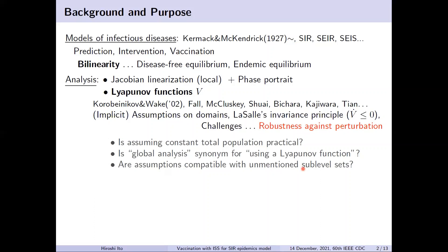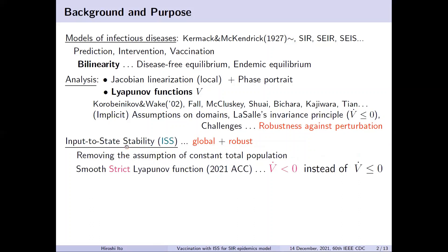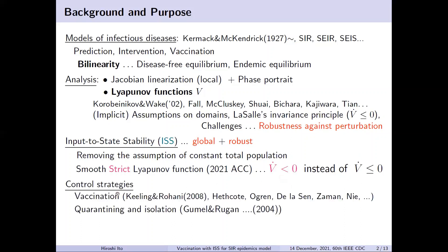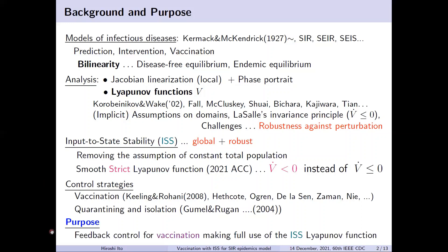Recently, the globalness and robustness have been addressed by employing the notion of input-to-state stability, or ISS for short. It also removes the assumption of constant total population. The robustness is made accessible by letting the Lyapunov function have strictly negative derivatives. Control via vaccination and isolation have been widely studied, but they are local or based on classical Lyapunov functions. The purpose of this paper is to go beyond such controls by proposing feedback control for vaccination, making full use of the recently developed Lyapunov function.